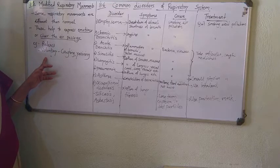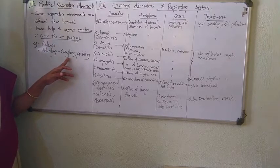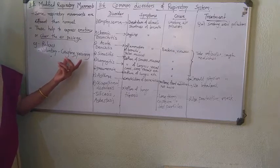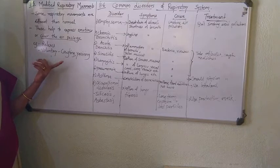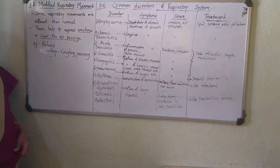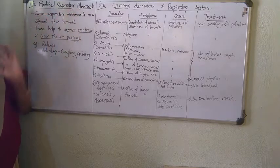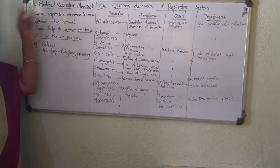Some modified respiratory movements are voluntary. For example, coughing and yawning. Both coughing and yawning are voluntary reflexes associated with respiratory movement. Remember these examples of modified respiratory movements — that is all that is covered in section 8.5.